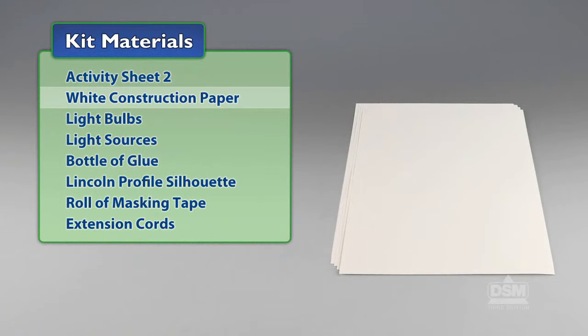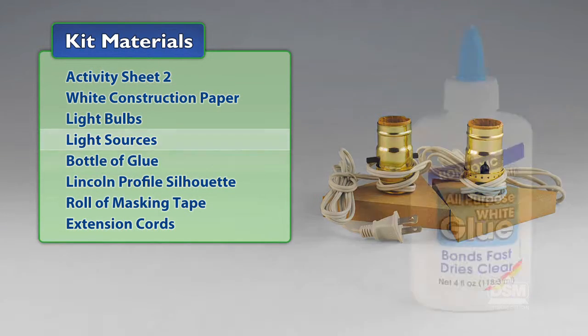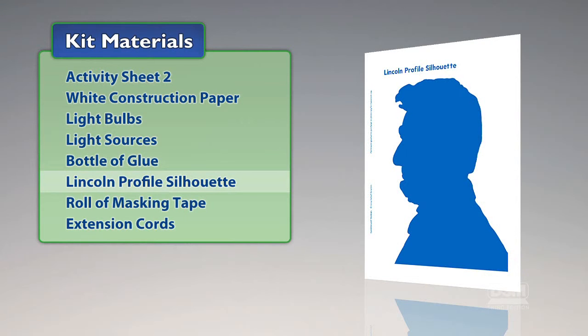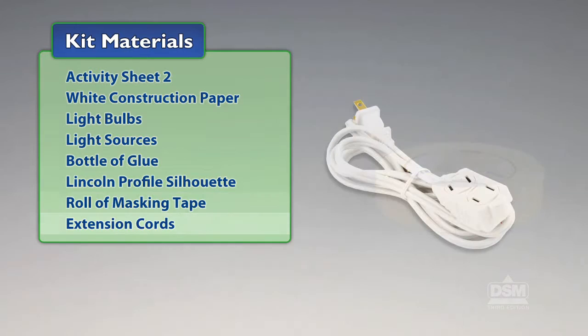You will need the following materials from the kit: Activity Sheet 2, white construction paper, light bulbs, light sources, bottle of glue, Lincoln profile silhouette, roll of masking tape, and extension cords.